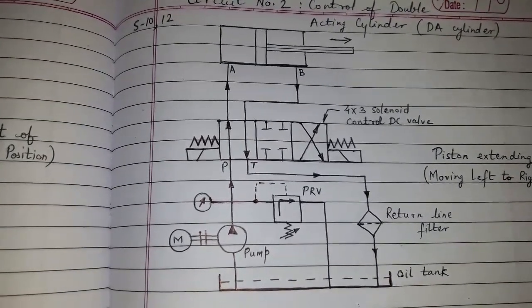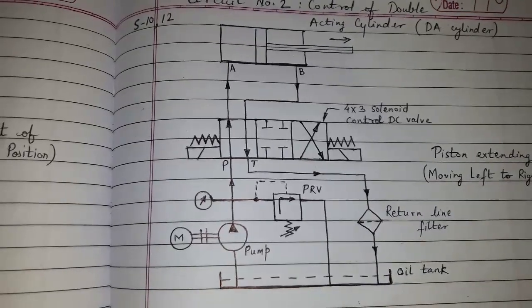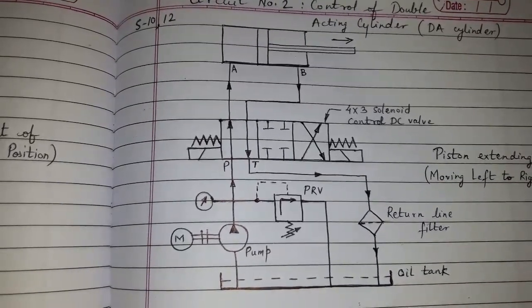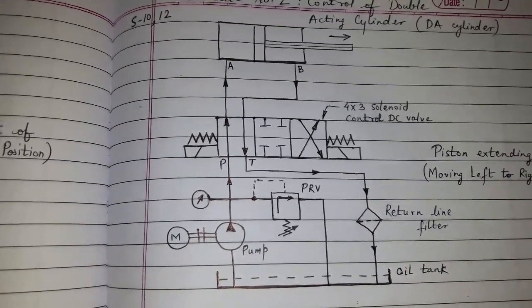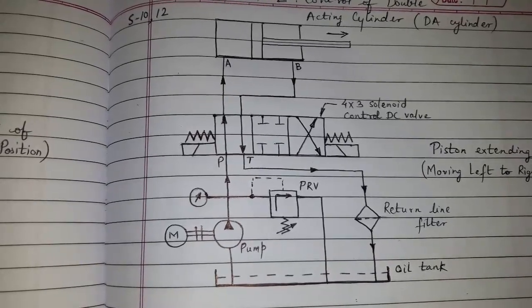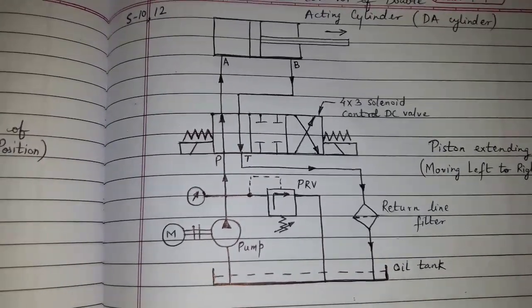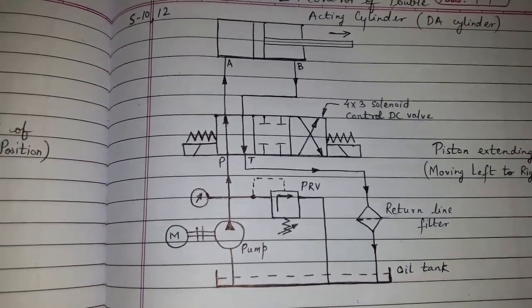Based on different positions of the DC valve, the piston has 3 types of motion: piston extending, piston retracting, and hold position where the piston is not moving. So let us start with piston extending.